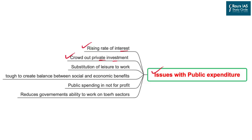When the government spends too much money, it also creates a substitution effect between leisure and work — people take more time for leisure and less time to work, which reduces productivity. When public expenditure is uncontrollable, it creates a tough balance between social and economic benefits, and the government must decide whether to focus more on social infrastructure or economic and physical infrastructure. Until this balance is met, public expenditure remains futile.